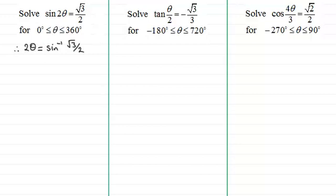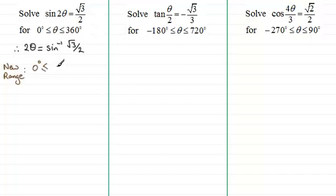So we'll just put down the new range. For this particular example, I've got to double each of these values. So if I double 0, we've got 0 degrees, which is less than or equal to 2 theta, doubling 360 gives 720 degrees.